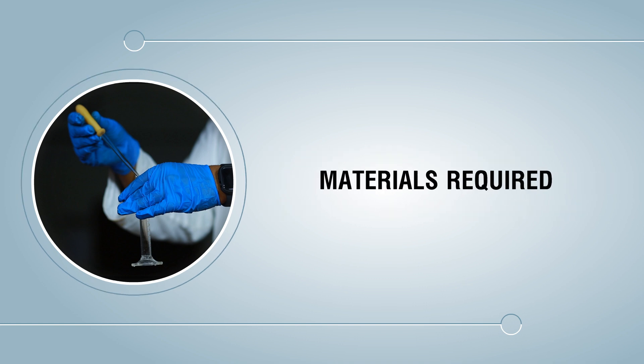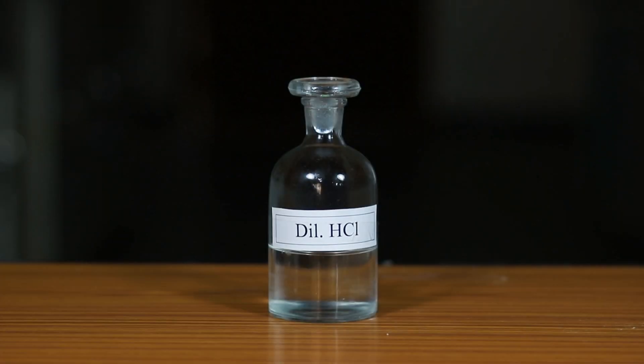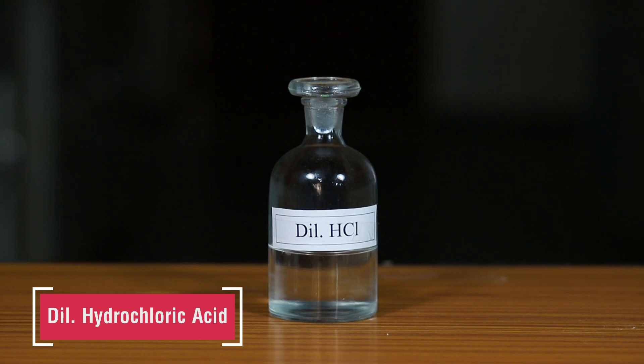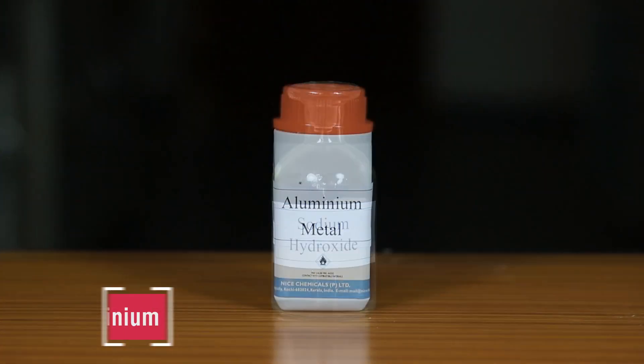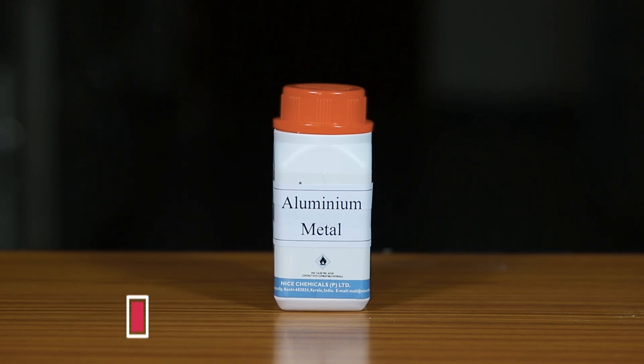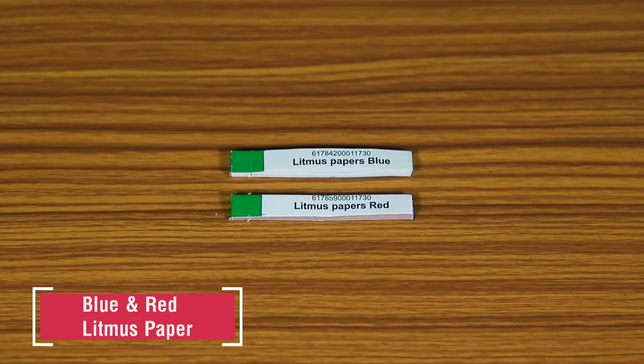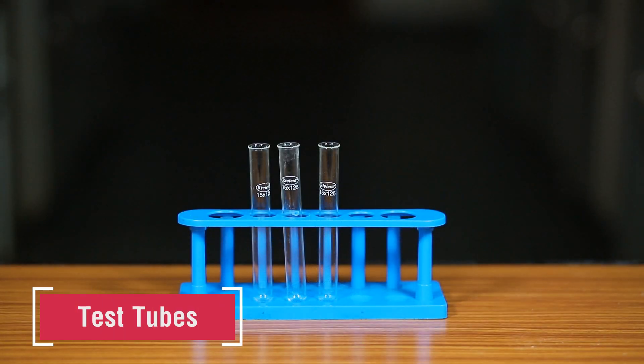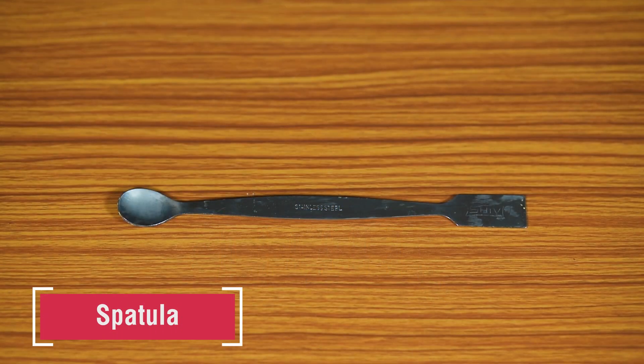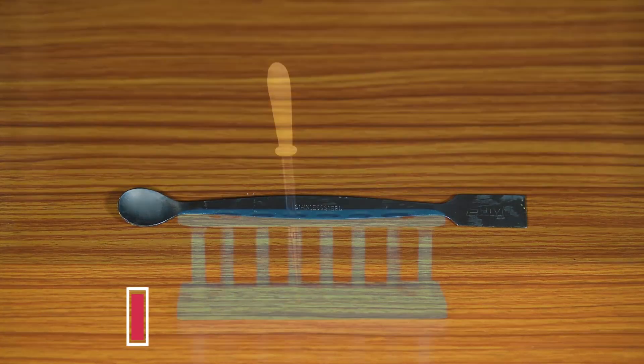Materials required: we will require dilute hydrochloric acid, sodium hydroxide solution, aluminium metal, red and blue litmus papers, measuring cylinder, test tube, spatula, and dropper.